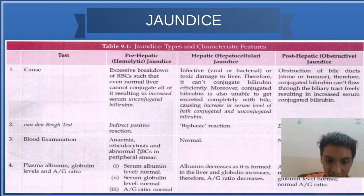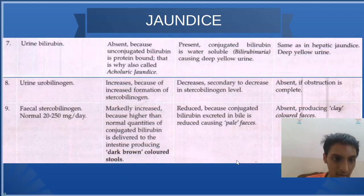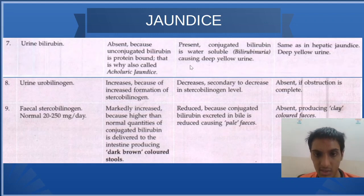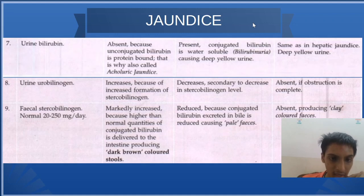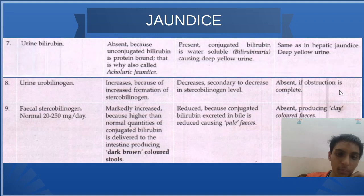Regarding bilirubin in urine — it is only seen in hepatic jaundice and not in the other two types. Urobilinogen is increased in pre-hepatic jaundice, decreased in hepatic jaundice, and not seen in post-hepatic jaundice. The same pattern applies to stercobilinogen as well.